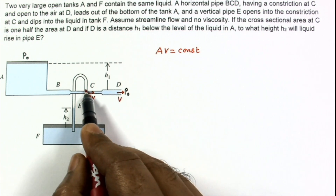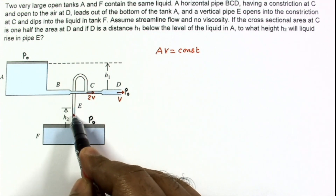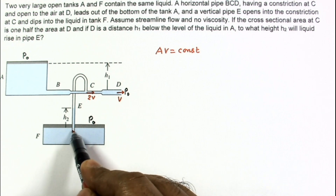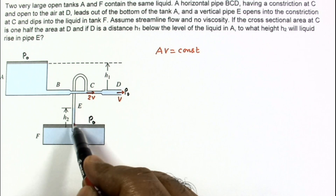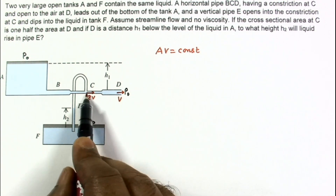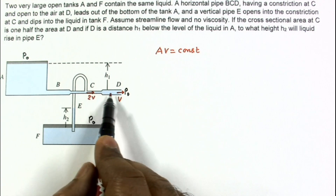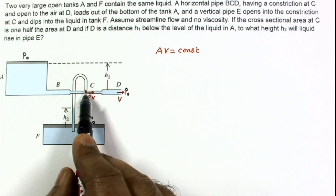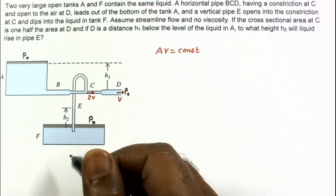So pressure at point C will be less than atmospheric pressure. Since pressure in the tube at C goes below atmospheric, and the pressure at the liquid surface in tank F is atmospheric, there is a net pressure difference that pushes liquid up into pipe E. Liquid rises due to the pressure difference created by the high velocity at C compared to point D.